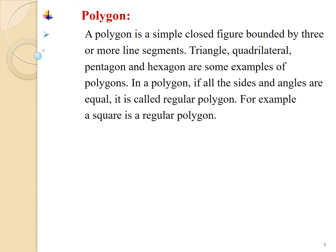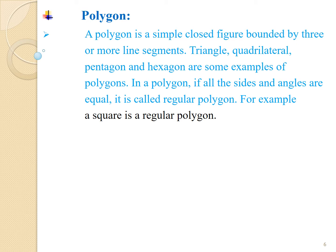Polygon: A polygon is a simple closed figure, bounded by three or more line segments. Triangle, quadrilateral, pentagon, and hexagon are some examples of polygons. In a polygon, if all the sides and angles are equal, it is called a regular polygon.